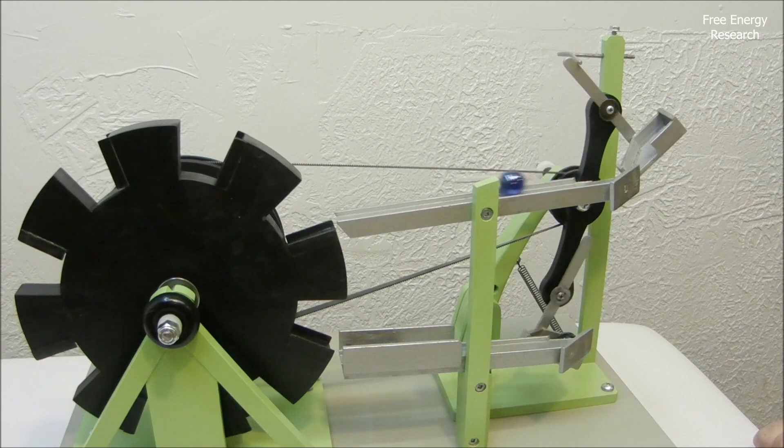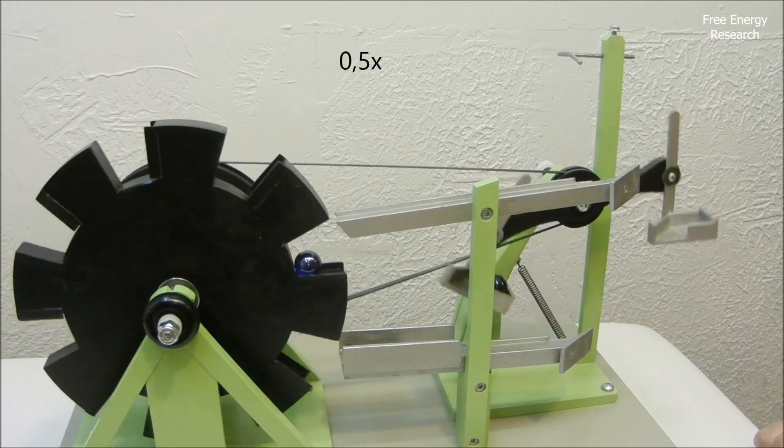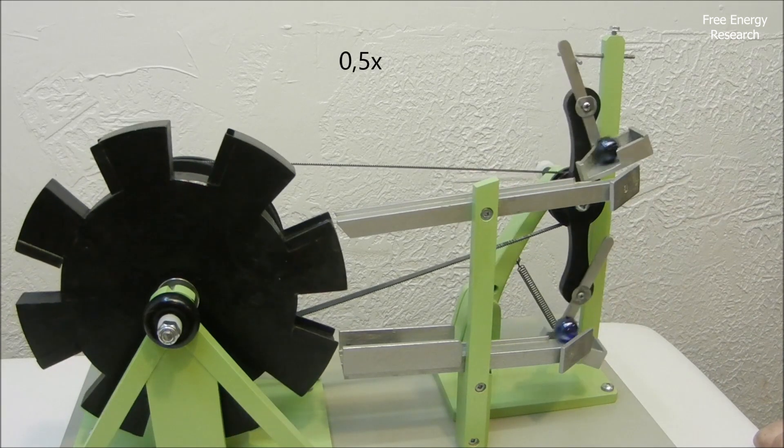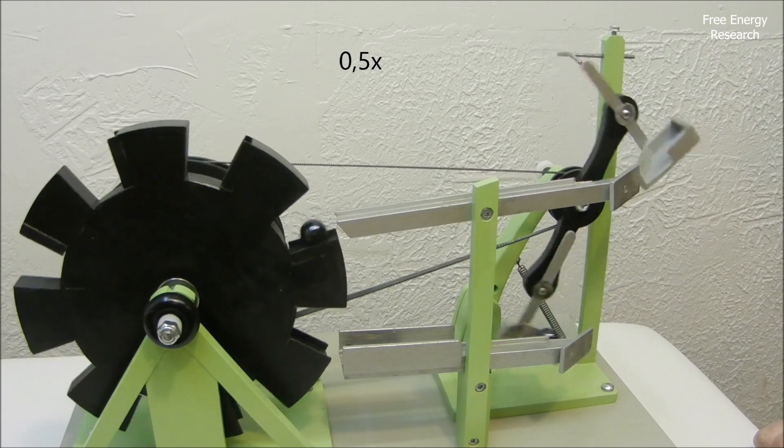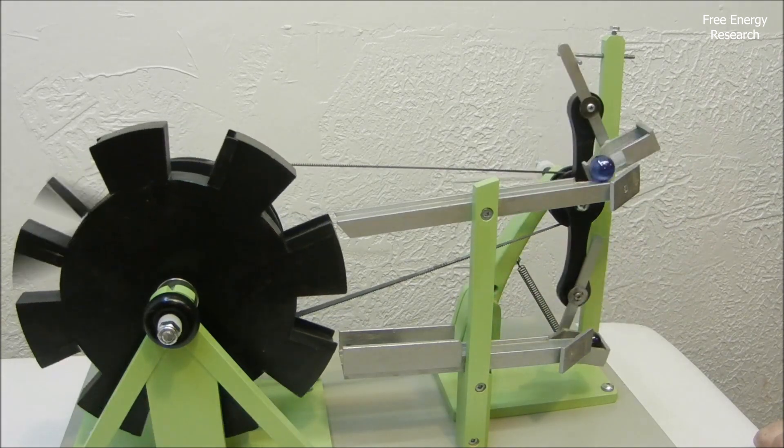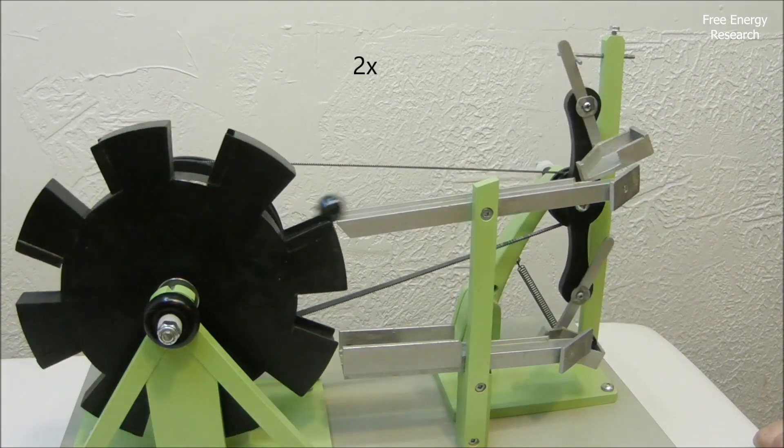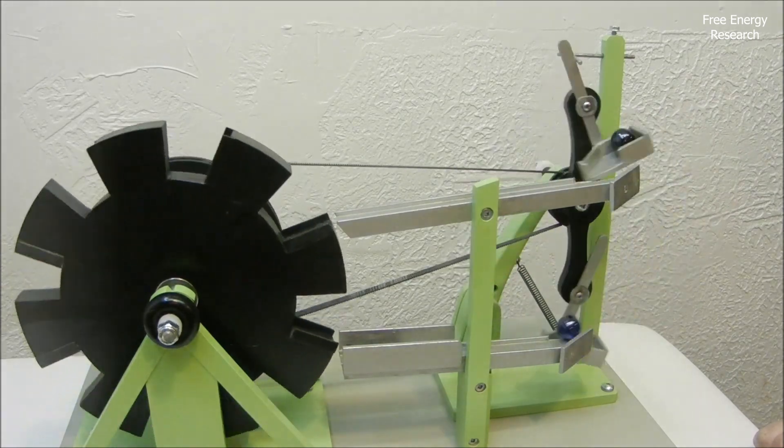The first law, also known as the law of energy conservation, states that energy cannot be created or destroyed, only converted from one form to another. A perpetual motion machine would require an endless supply of energy, which contradicts this principle.